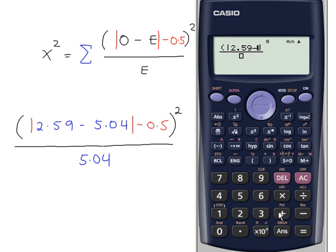Enter 2.59 minus 5.04. So that part there is here between these red vertical lines. Scroll to the right. Minus 0.5. Close brackets. Squared. Over 5.04. There you go. And then you write this down and then you work out the next value and so on.